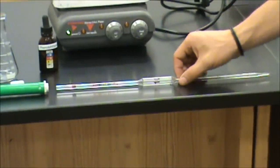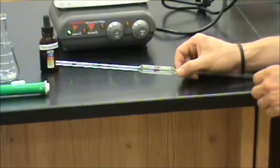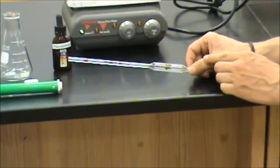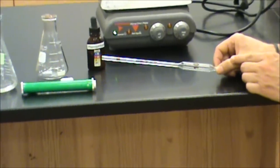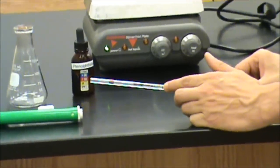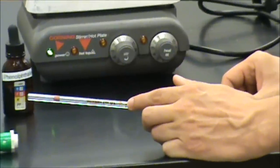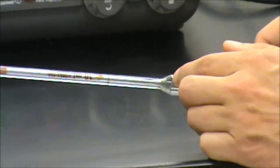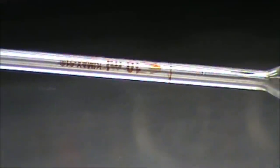This is our 10 milliliter volumetric pipette. In order to accurately measure out 10 milliliters, we want to get the bottom of the meniscus lined up with this marking on the glassware that's just above the wide portion of the pipette.